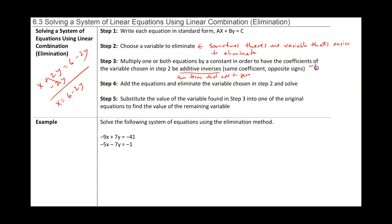For example, negative 6x and positive 6x are additive inverses because they add to zero. Positive 11x and negative 11x are additive inverses because they add to zero. But negative 3x and negative 3x are not additive inverses because they don't add to zero. For additive inverses we have to have the same coefficient but opposite signs — one negative and one positive. If they're both the same sign, those are not additive inverses.